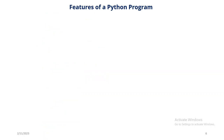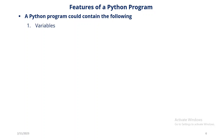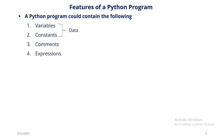The features of a Python program: a Python program could contain variables and constants, both of which form the data in a program — in fact, in any programming language. Variables and constants make up the data. There can also be comments, which we have learned about before, expressions, operators, and keywords.